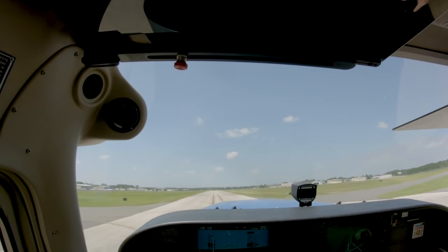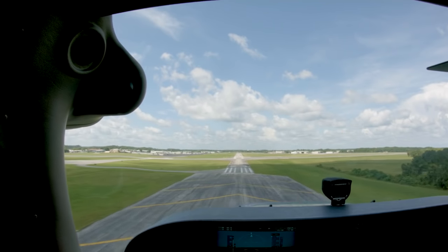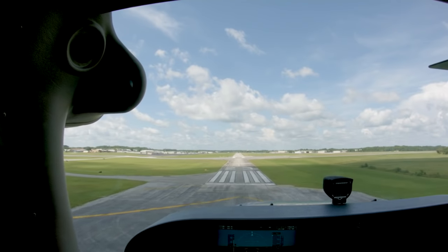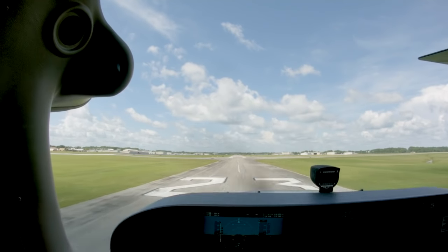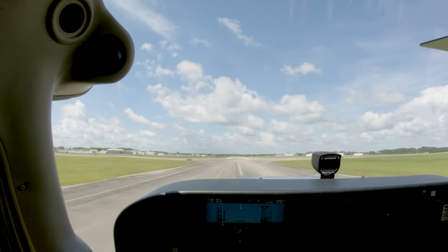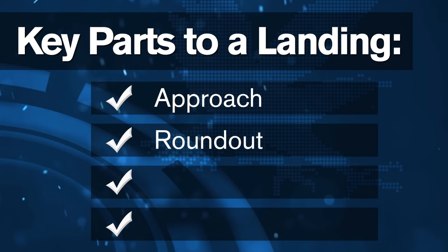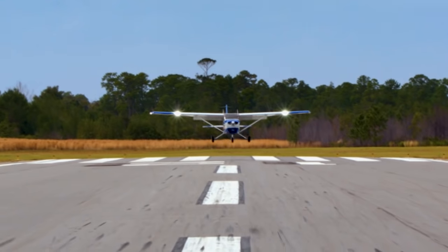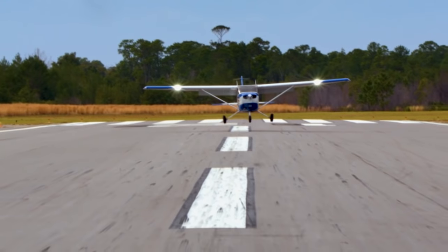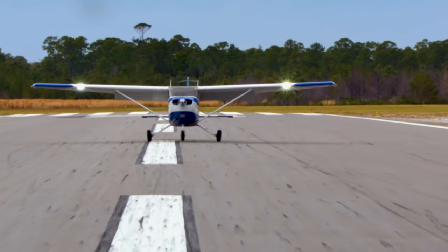Just like a normal take-off and climb, a normal approach and landing is a skill used during normal situations with calm winds, direct headwinds, or crosswinds, no obstacles on the final approach, and a long, hard-surfaced runway. At this point in your training, we are going to focus on the key parts to a landing: the approach, the roundout, the touchdown, and the after-landing roll. Landings will take some time to master, so this lesson will introduce you to the basic ideas behind a stabilized approach and landing.